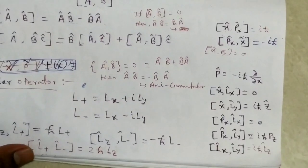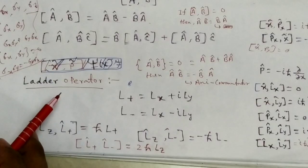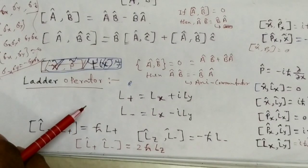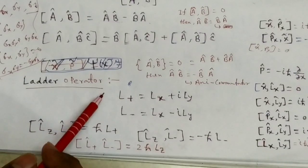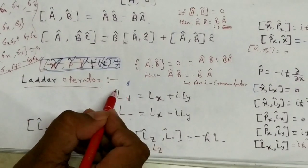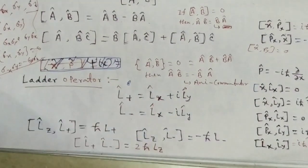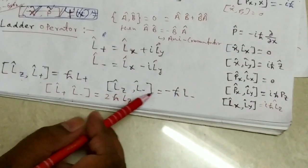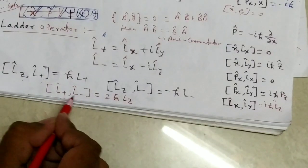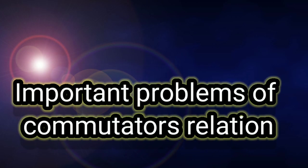Now we discuss another important operator called the ladder operator. In linear algebra, a raising and lowering operator increases and decreases the eigenvalue of another operator — these are known as ladder operators. They are defined as L_plus = L_x + i*L_y and L_minus = L_x minus i*L_y. The commutator relations are: [L_z, L_plus] = h_bar * L_plus, [L_z, L_minus] = minus h_bar * L_minus, and [L_plus, L_minus] = 2*h_bar*L_z. These are very important for MSc entrance tests.